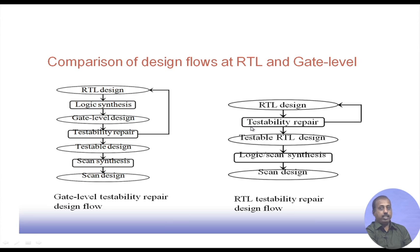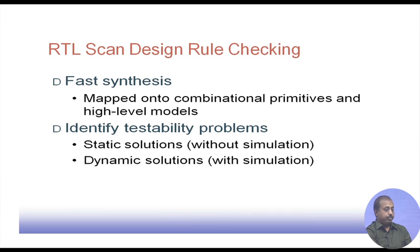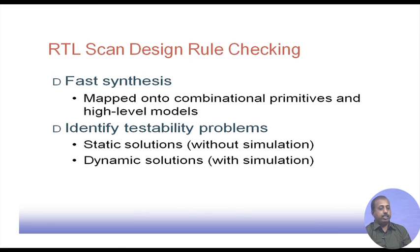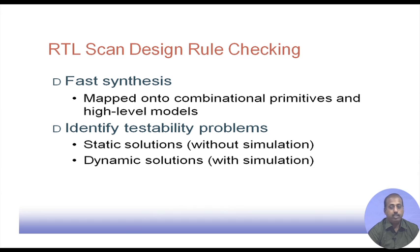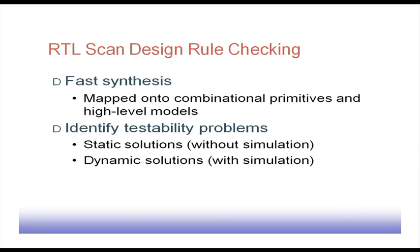For RTL scan design rule checking in fast synthesis, designs are mapped onto combinational primitives and high-level models, using pre-designed modules. There may be testability problems that need to be identified. There can be static solutions — analyzing behavior and checking connections between modules — or dynamic solutions — simulating the system to see whether it creates any problem.